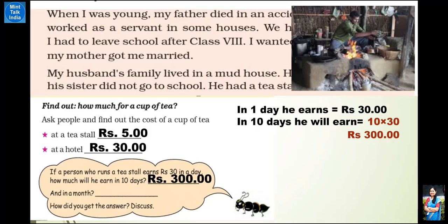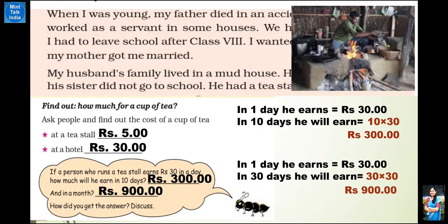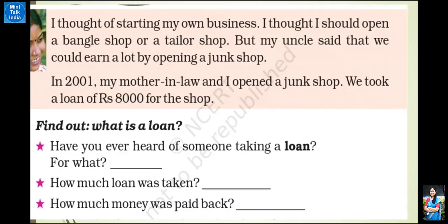So if a person earns ₹30 in one day, then what will he earn in a month? एक महीने में लगभग 30 days मान लेते हैं। तो अगर एक दिन में ₹30 है, 30 days में कितना होगा? 30 multiply by 30 — 3 multiply by 3 is 9, और side में 2 zeros — this will become ₹900 as the answer.